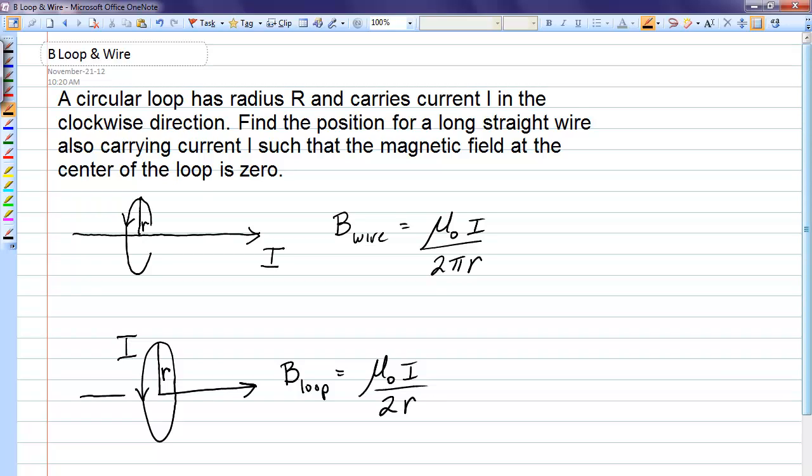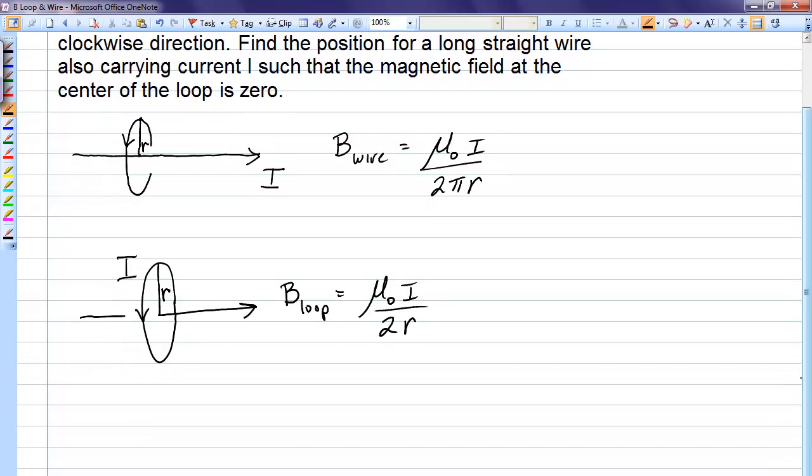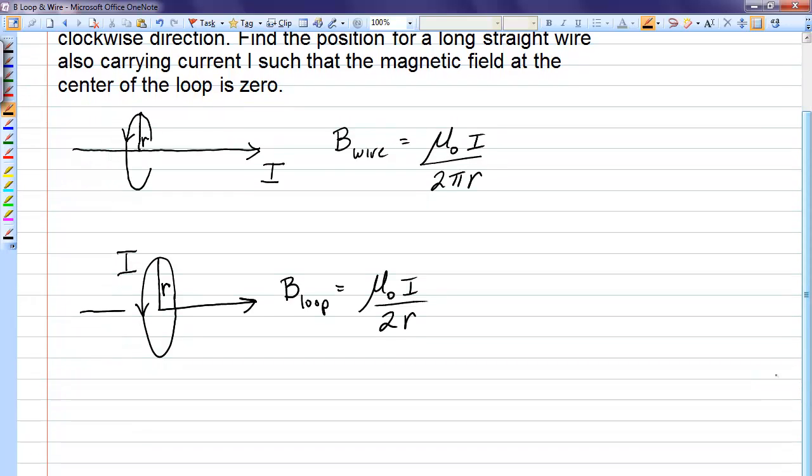Now the problem that we have here is that we have both a circular loop and a straight wire. So my circular loop of wire I'm going to put in the plane of the page and it says the current goes clockwise. That would produce a magnetic field into the page at the center of the loop.